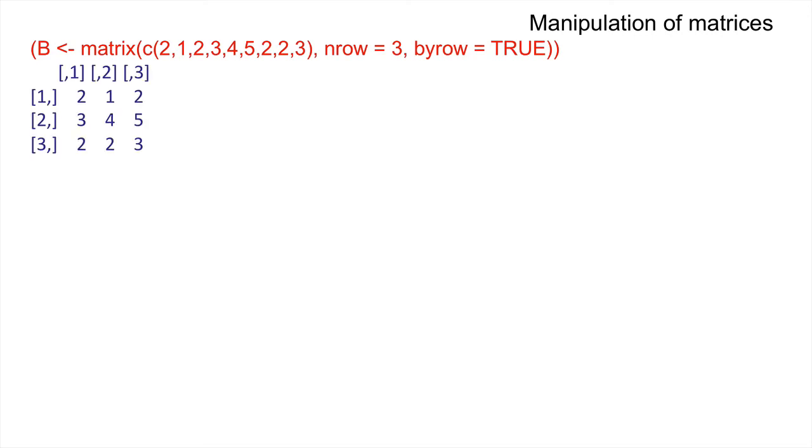Finally, let's have a look at manipulation of matrices. Let's define the matrix B as a combination of these different elements through concatenate, and there are three rows and we're filling by row. If we want to calculate the row sums in each of these rows of that matrix, we can define a vector rs with three separate elements, the individual sums of each of those rows. rowSums is the function that we would use.